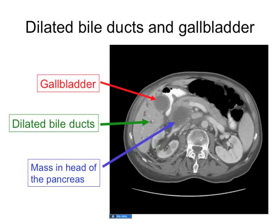You can also get a dilated gallbladder. If the gallbladder is really dilated, the obstruction is below the cystic duct entrance. If you obstruct the bile duct above the cystic duct entrance, the intrahepatic ducts dilate but the gallbladder will probably be shrunken. So the size of the gallbladder helps localize where the obstruction is.